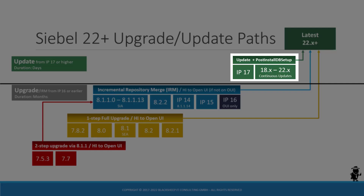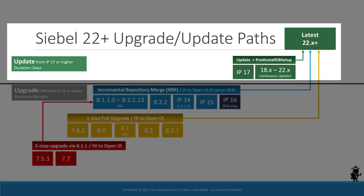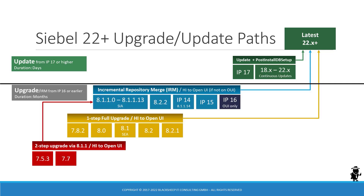If you already ran a successful Siebel upgrade to IP17 or higher, you might be on any version between IP17, Siebel 18, 19, 20, or 21. To get from there to the latest update, you execute the aforementioned update process. The real benefit of the continuous release model is evident here, as the update process will at most take a few person days.